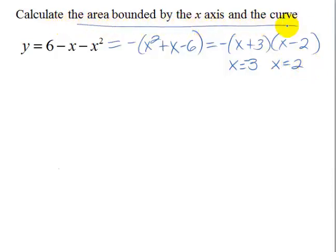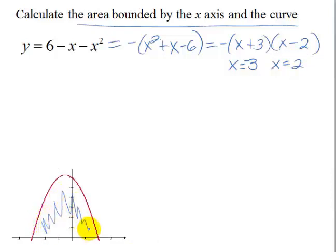That's important because if I need to find the area bounded by the x-axis and the curve, I need to know where it crosses the x-axis. So we know we've got this parabola that opens down that crosses the x-axis at negative 3 and at 2. So here's the graph, and we are looking to find this area.